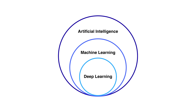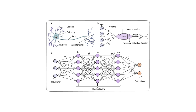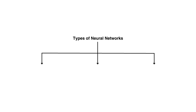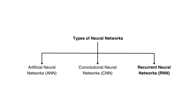Deep learning is a subset of machine learning — meaning all deep learning is machine learning, but not all machine learning is deep learning. It's a more advanced and specialized approach that uses neural networks with multiple layers designed to mimic the human brain. Deep learning is especially powerful with larger, more complex datasets like images or audio. Types of neural networks include artificial neural networks for numerical data, convolutional neural networks for images, and recurrent neural networks for sequential or time series data like speech or stock prices.